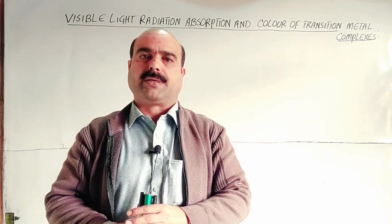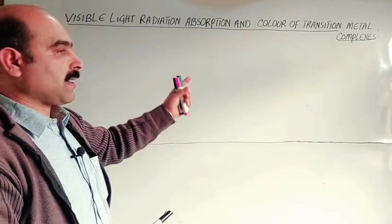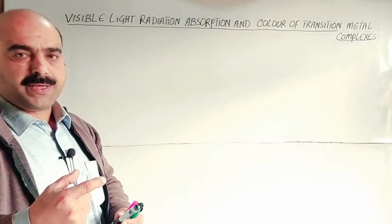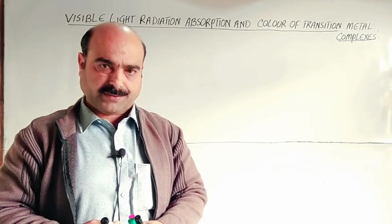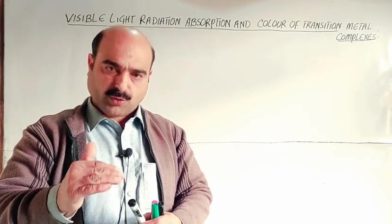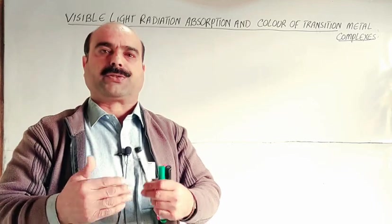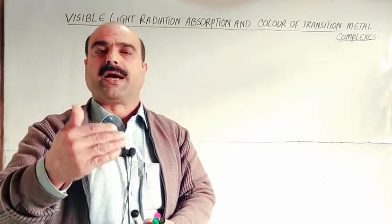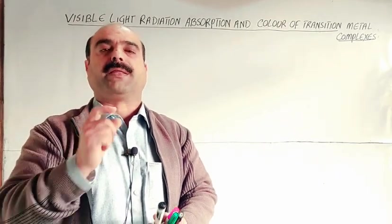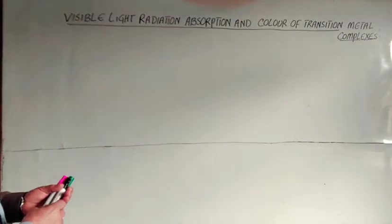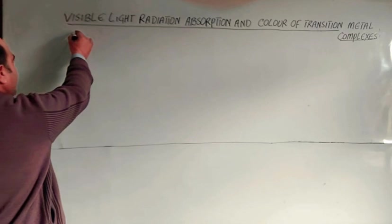Coordination complexes are mostly colored. Transition metal compounds are mostly colored because d-orbitals, when electrons excite from one d-orbital to another d-orbital, this d-d transition occurs. The electron from low energy d-orbital converts, promotes, excites to high energy d-orbital. This excitation occurs by absorption of visible range radiation.